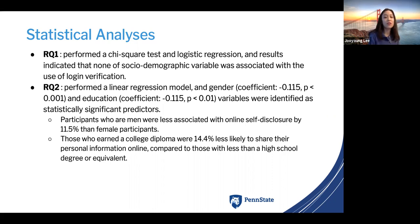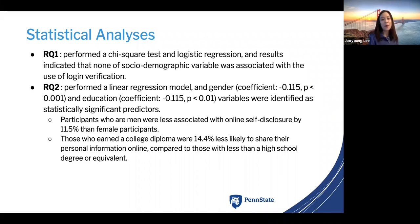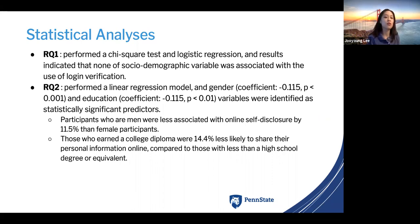For research question two, we performed a linear regression model and found that gender and education variables were identified as statistically significant predictors. Participants who are men were 11.5% less associated with online self-disclosure than female participants, and those with a college diploma were 14.4% less likely to share personal information online compared to those with less than a high school diploma or equivalent. The overall findings suggested that those from lower social demographic groups tend to disclose more, though we only found differences in gender and education level.